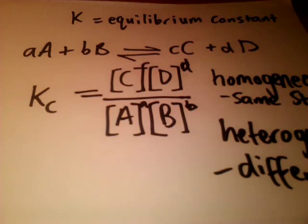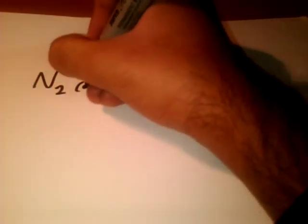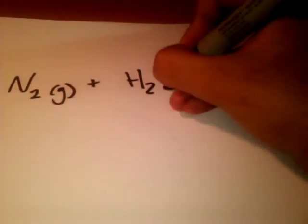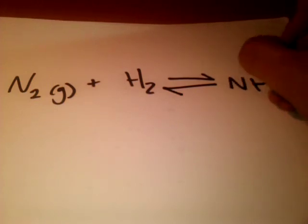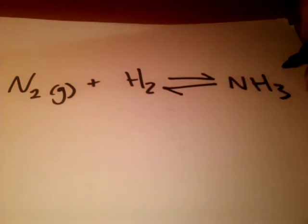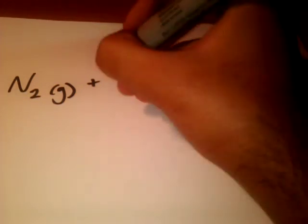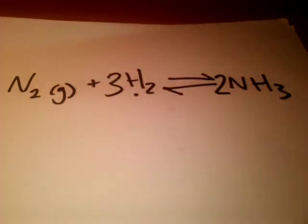The equation for the Haber process is: nitrogen gas plus H2 gives NH3. We need to balance the equation. There's two nitrogens, so N2. There's three hydrogens in NH3, so we need 3H2, and 2NH3 to balance.